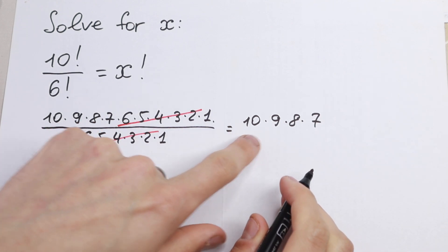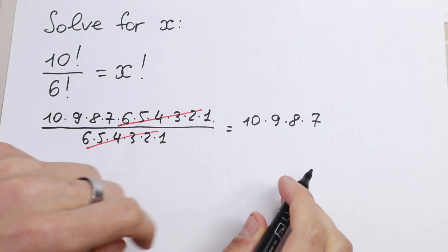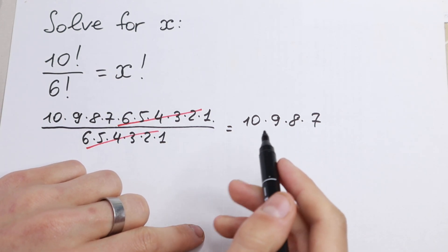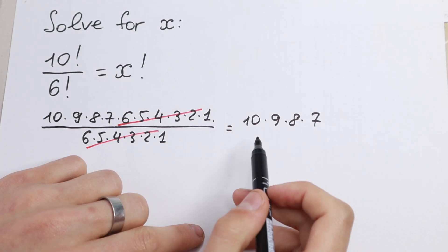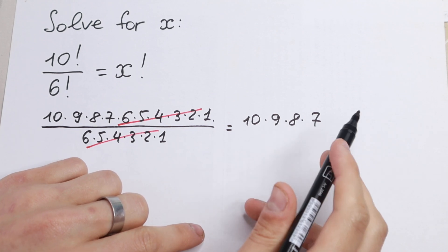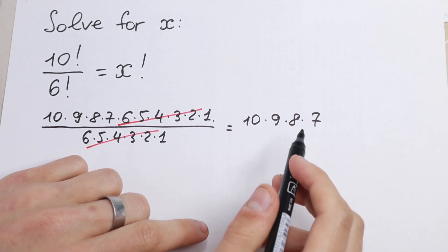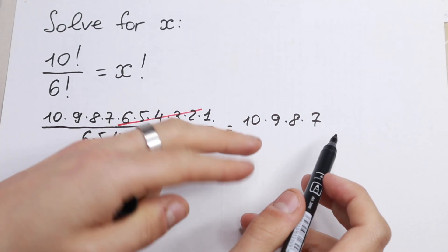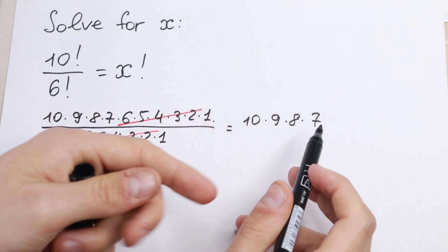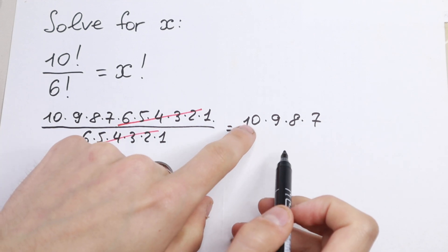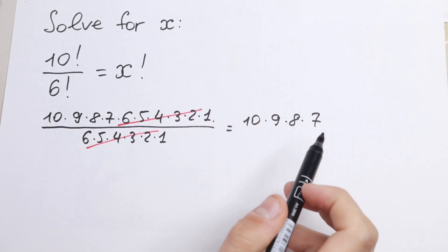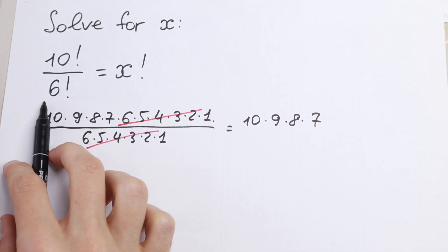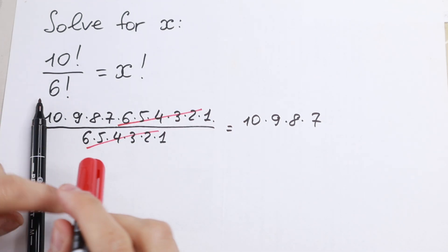This is equal to x factorial. But what would x be equal to? Because this is not like a common factorial that we know, since we have just four numbers being multiplied together.